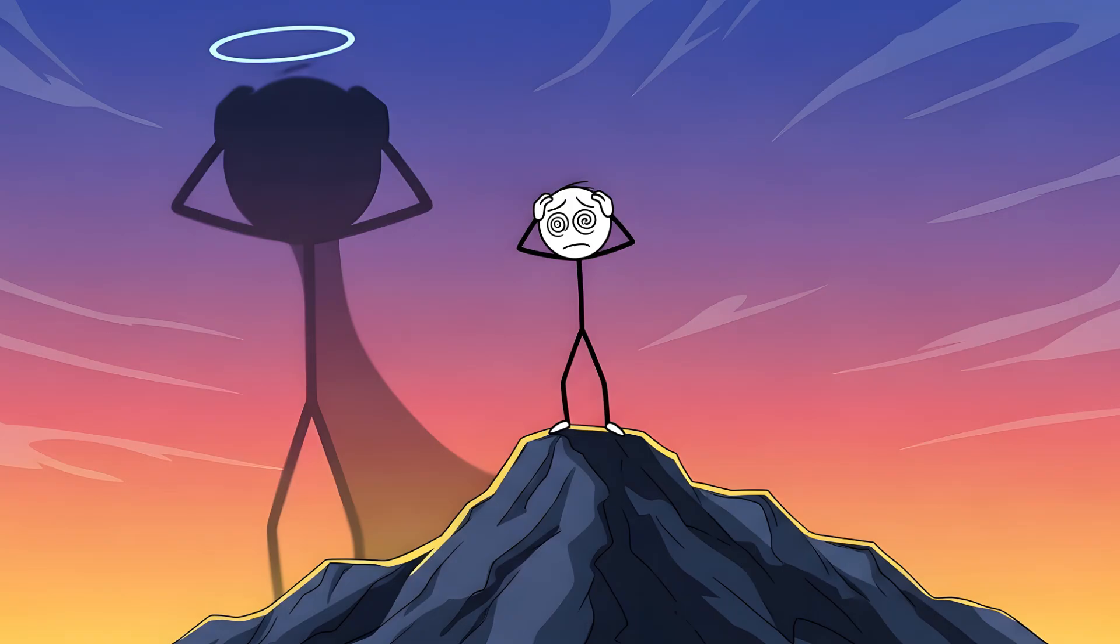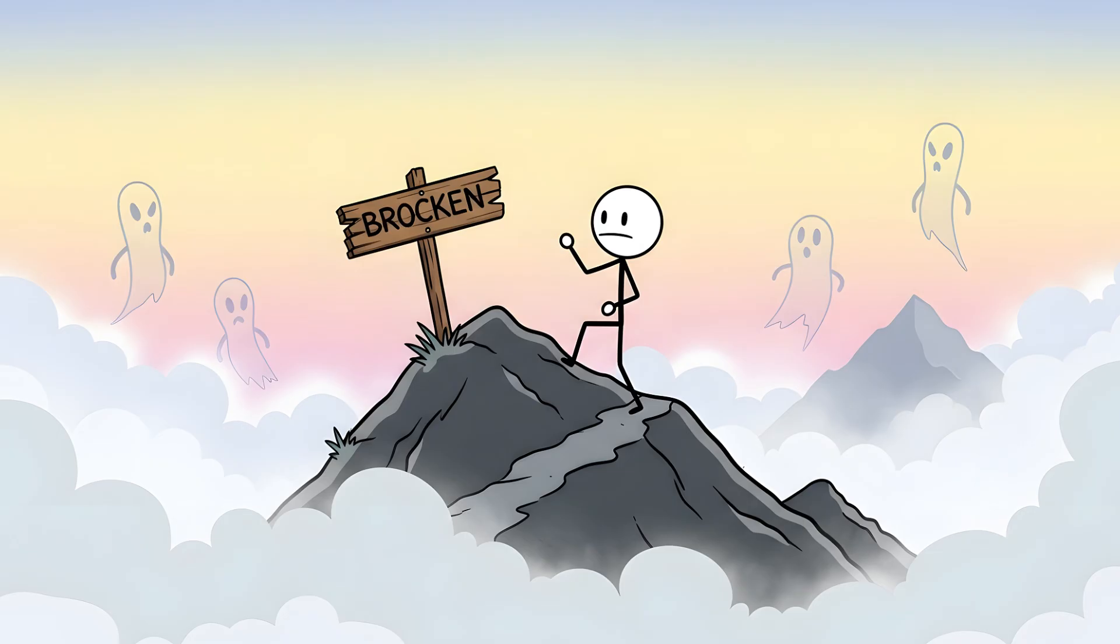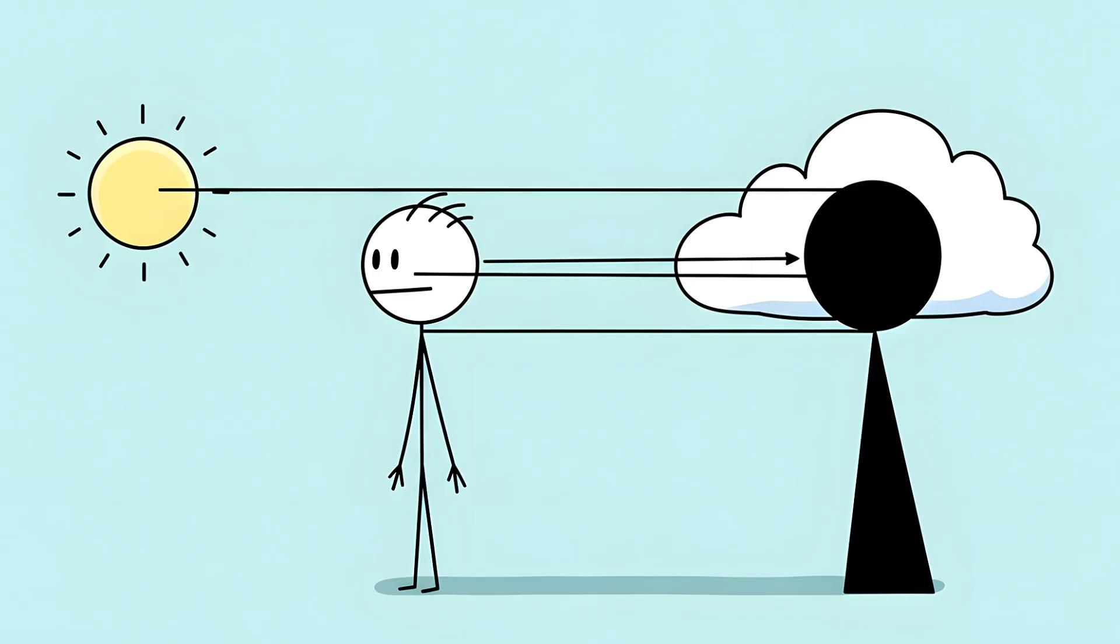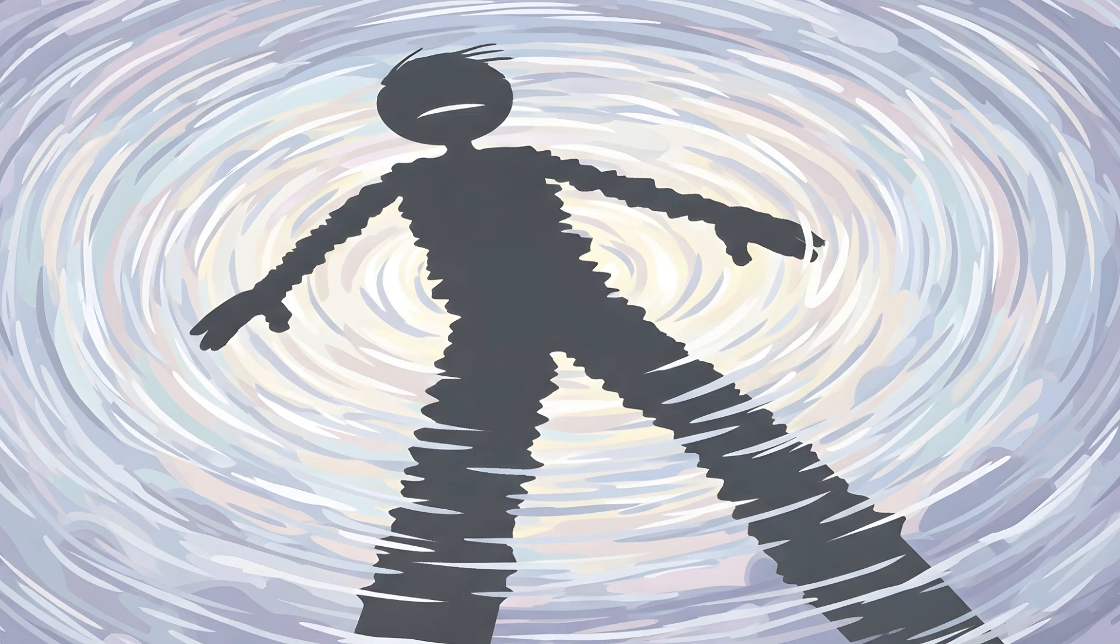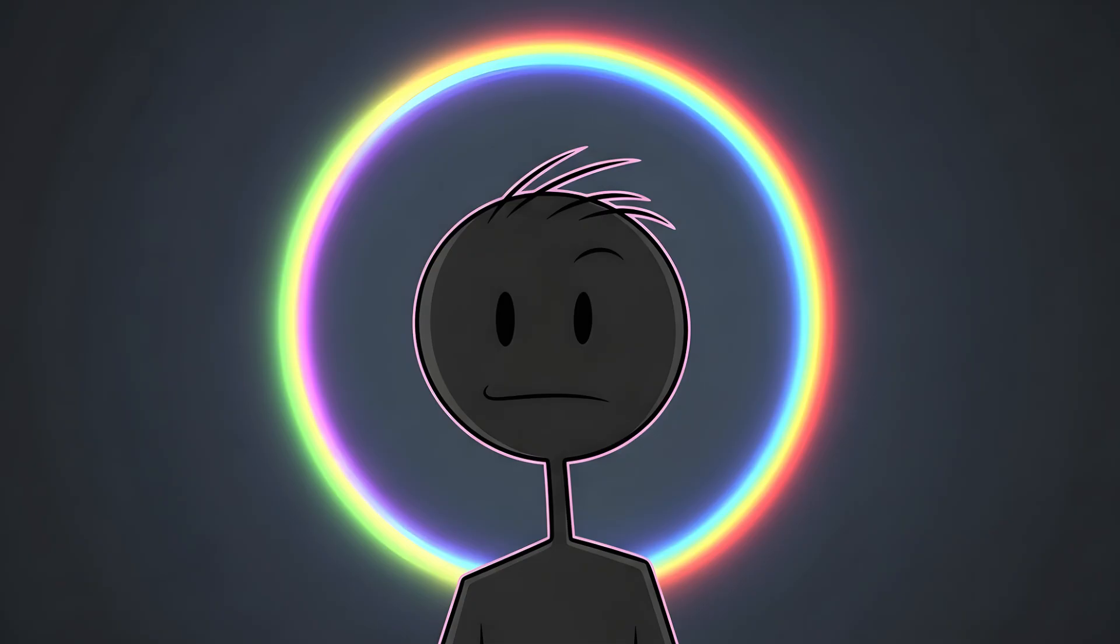This is the Brocken Spectre, an illusion so powerful and personal it has driven people to madness. It's named after the Brocken, a peak in Germany where frequent mists make the phenomenon common, and where local legends of mountain spirits were born. The science is a perfect conspiracy of optics and perspective. The giant part is a trick your brain plays on you. The shadow is cast on water droplets in the mist at a varying distance. With no reference points, your brain can't judge the scale, so it defaults to freaking huge. The spooky, ethereal movement is because the clouds and mist are swirling, distorting the shadow's shape.